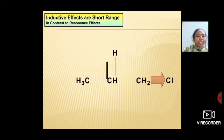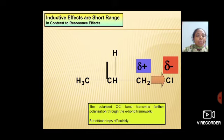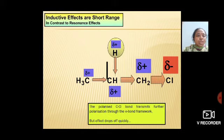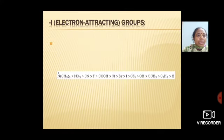Inductive effects are short in range. That is, in n-propyl chloride (CH3CH2CH2Cl), chlorine is the electron-withdrawing group that withdraws electrons towards itself. It strongly withdraws electrons from the first CH2 group more than the second CH2, and more than the CH3 group, so it is short in range.